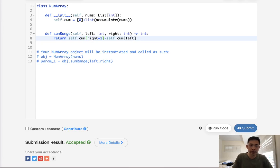And there we go. Accepted. So initializing this number array class is going to take all of them time but calculating the sum range is basically O(1).